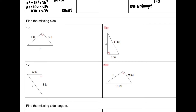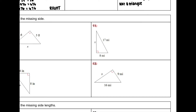So numbers 10 through 13, you're finding a missing side and I give you two side lengths, which tells you we're going to use the Pythagorean Theorem. Remember, the Pythagorean Theorem is A squared plus B squared equals C squared, and C is always across from the right angle — it's always the hypotenuse.